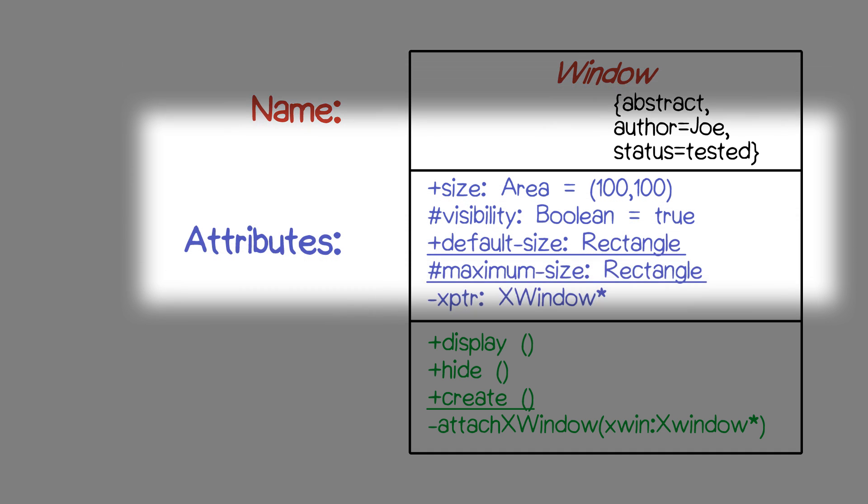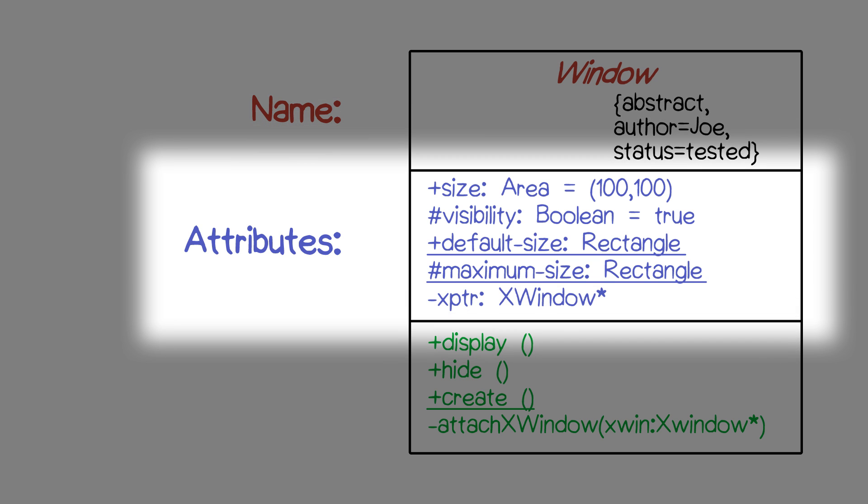In the middle is an area where the attributes of that class are described. In this case, there are attributes for the size of the window, the visibility, and other features.